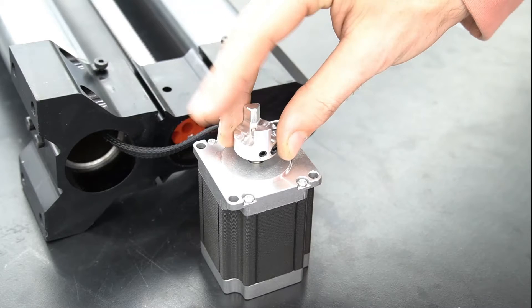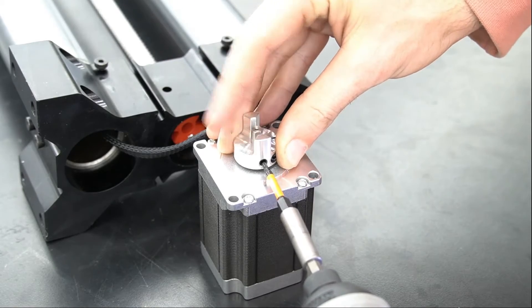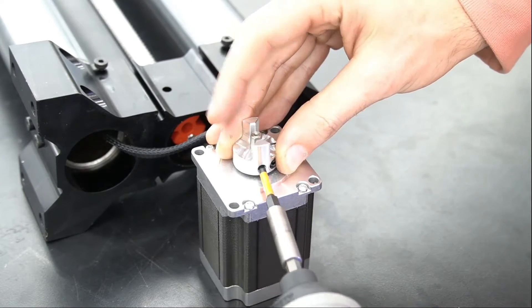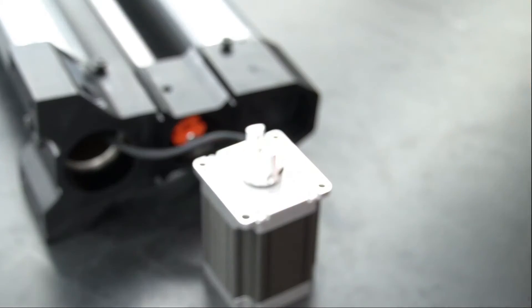You need to make sure you leave a one to two millimeter gap between the coupler and the motor body. We're going to tighten down the center set screw first, and once we've done that, we will tighten down the secondary bolt that will clamp around the shaft.